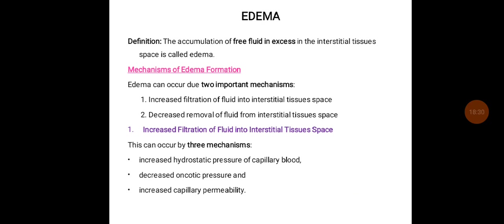Edema is the accumulation of excess free fluid in the interstitial tissues. Edema can occur due to two important mechanisms: increased filtration of fluid into the interstitial spaces, and decreased removal of fluid from the interstitial tissue spaces. Increased filtration can occur because of three mechanisms: increased hydrostatic pressure of the capillary, decreased oncotic pressure, and increased capillary permeability.